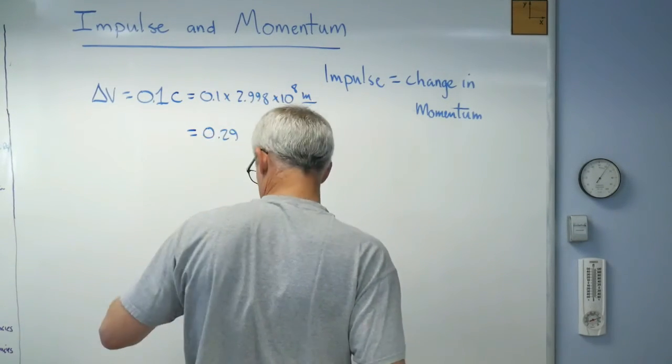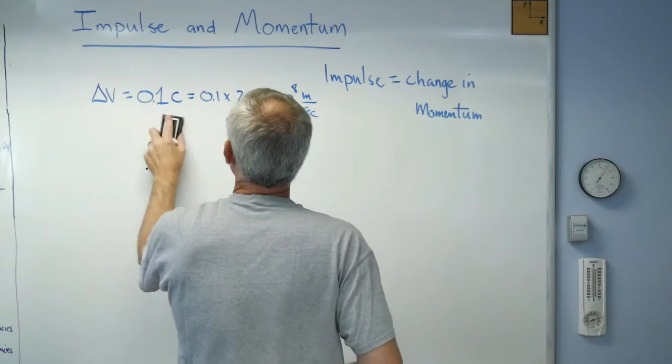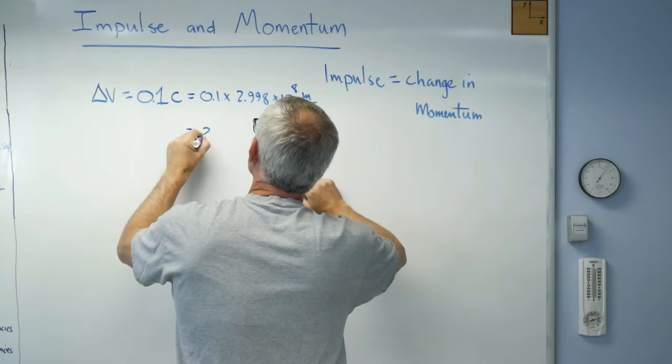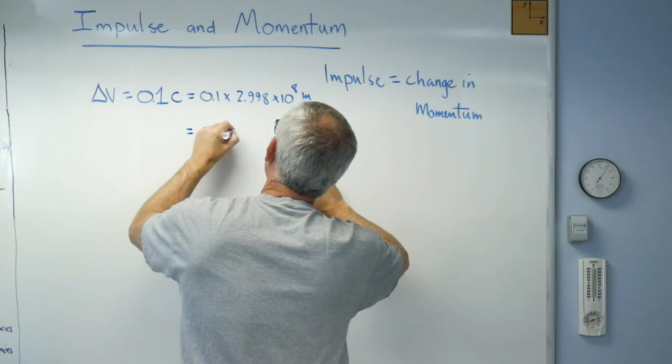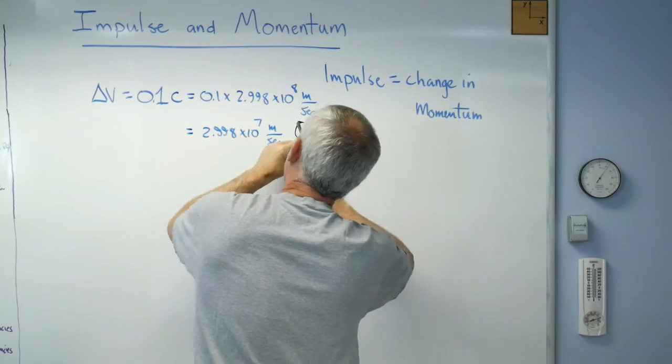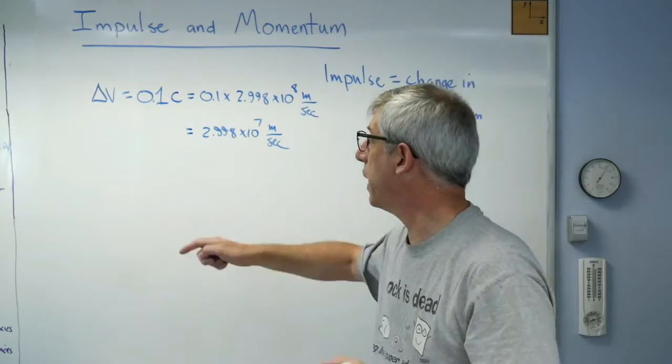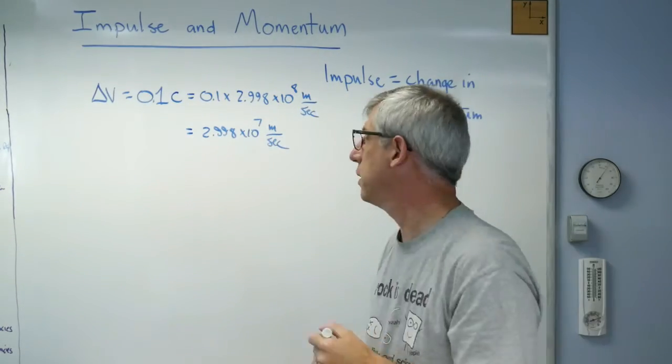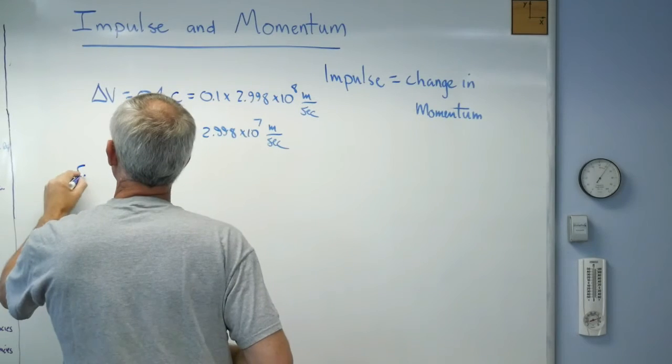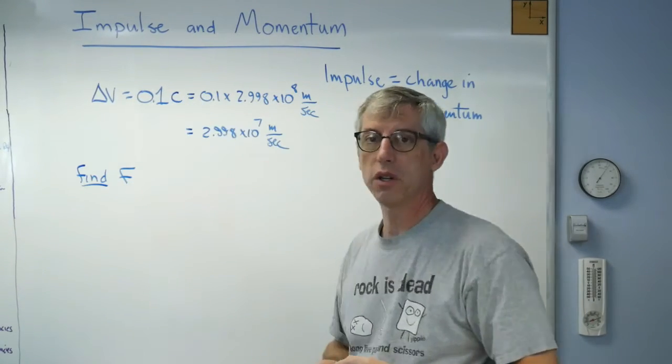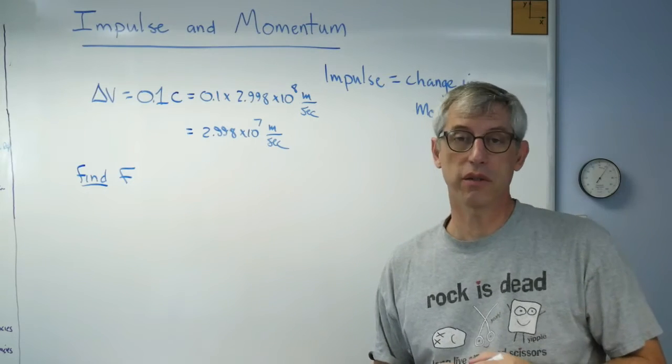That's 0.29, yeah. Let's try this one more time here. 2.998 times 10 to the 7 meters per second. So that's 0.1 light speed. That's our change in velocity. Now, I want to find force.